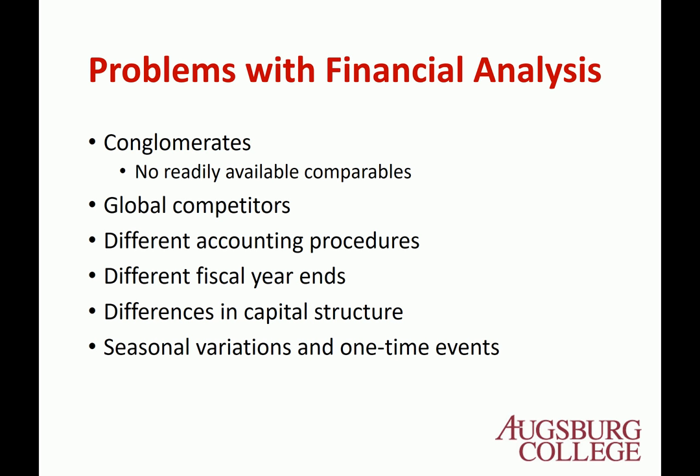Global competitors and global issues are also important. If you look at GM's ratios, you probably need to compare with Toyota too, because Toyota is a big competitor. However, because of differences in markets — Toyota also has big operations in Japan — you cannot directly compare. Different accounting procedures are the same issue: U.S. firms use U.S. GAAP, but many international companies use international GAAP — IFRS — which is quite different from U.S. GAAP. Different fiscal years are also a problem among U.S. firms too, because fiscal years are determined by the company, not by law. Some companies start with March, some with July, some with January, so it's hard to compare.